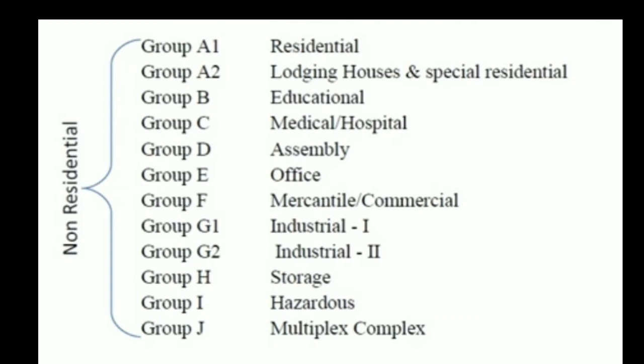As per KMBR classification: subgroups are A1 and A2 for Residential; Group B is Educational Building; Group C is Medical/Hospital; Group D is Assembly Building; Group E is Office Buildings; Group F is Mercantile Building; Group G1 is Industrial 1; Group G2 is Industrial 2; Group H is Storage Building; Group IN is Hazardous Building; Group J is Multiple Complex.